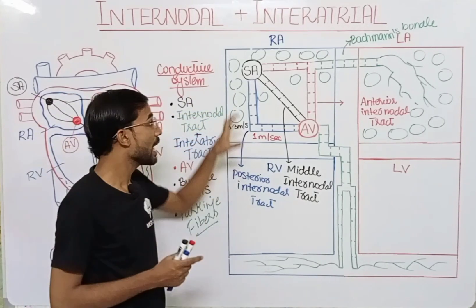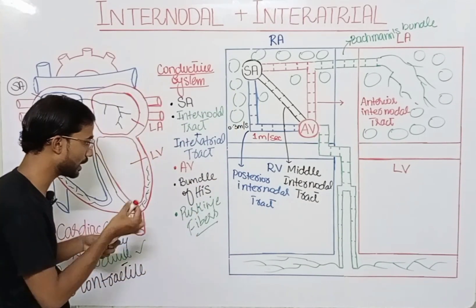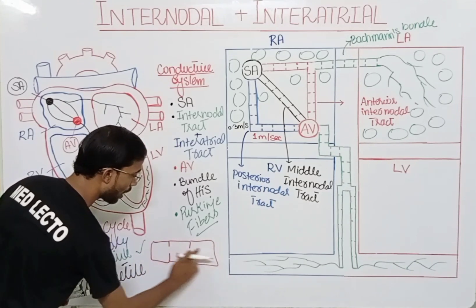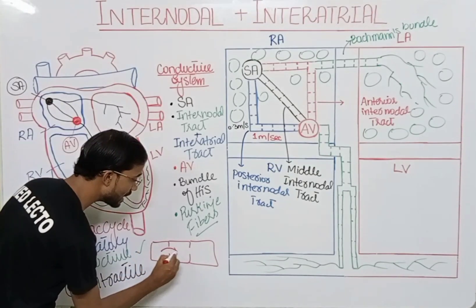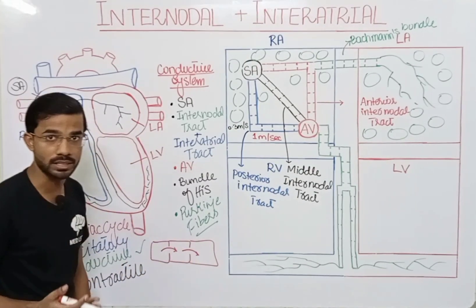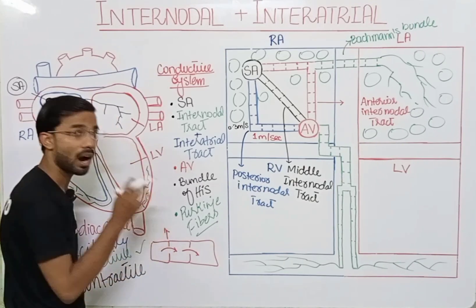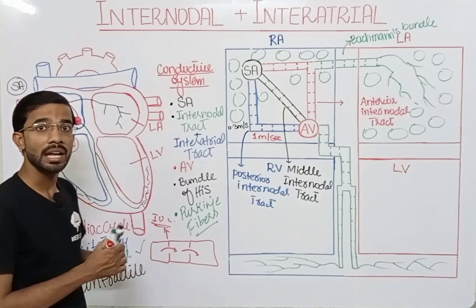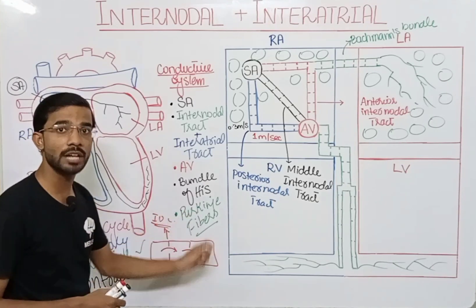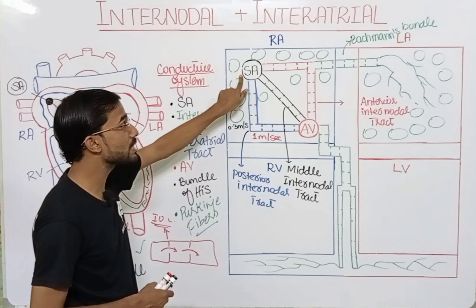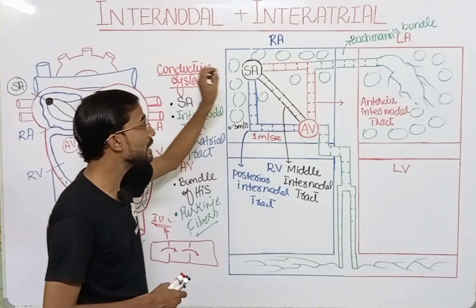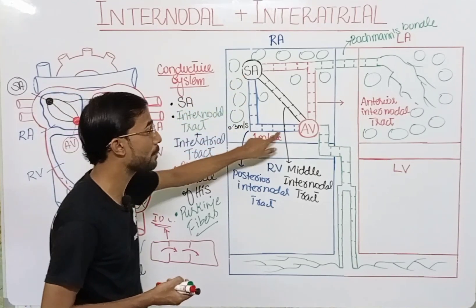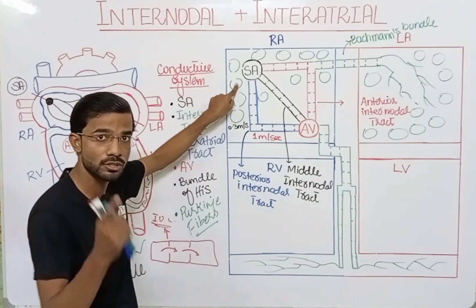The cells of the atria are interconnected, and different cells are connected among each other. The signal easily travels from one cell to the other in the form of ions. In the heart muscles, between the cells you will see the intercalated disc, which provides the pathway for signal travel from one cell to the other. So from the SA node, signal travels through the different tracks and at the same time also travels through the cells of the atria, but the signal through the tracks is faster.